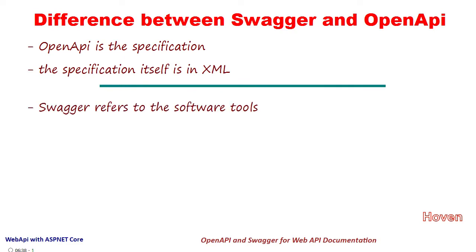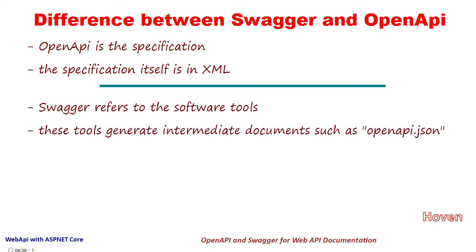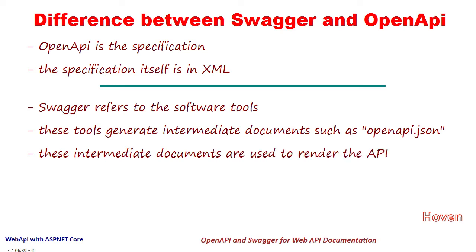Swagger, on the other hand, refers to the software tools and applications that implement the above specification. Some of these tools generate intermediate documents such as openapi.json, and there are others that use these intermediate documents to render the API in a well-formatted GUI-based interface.